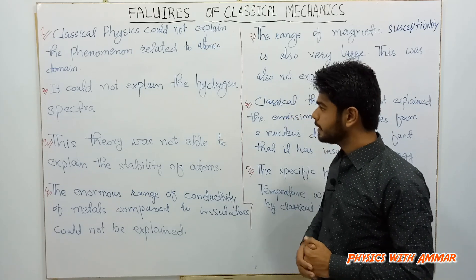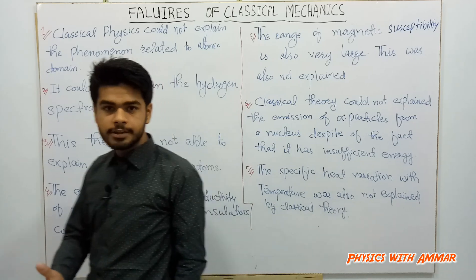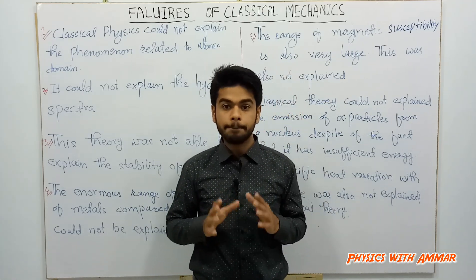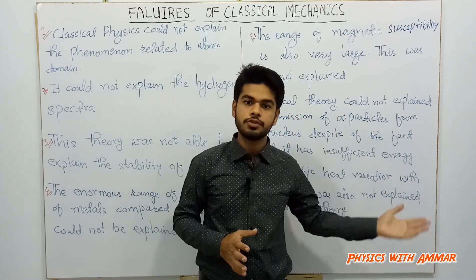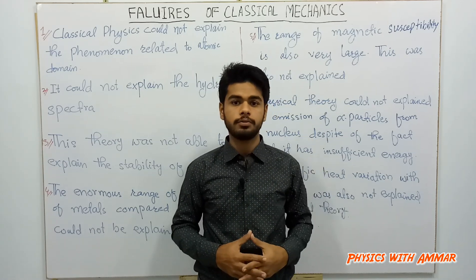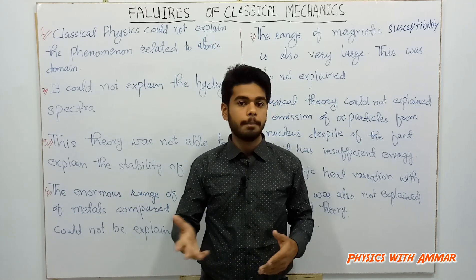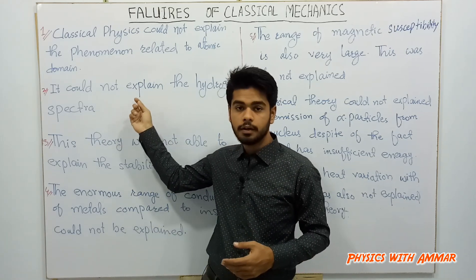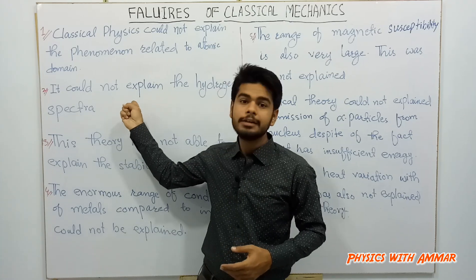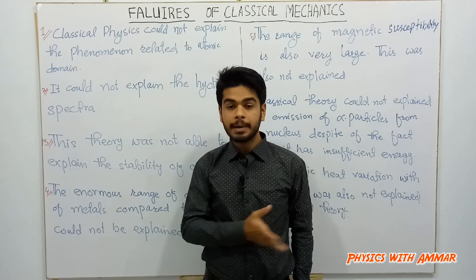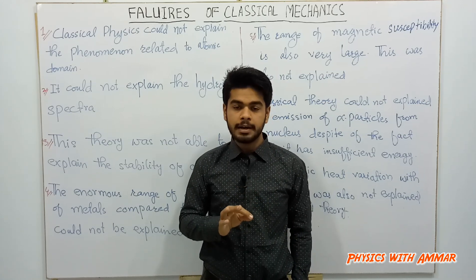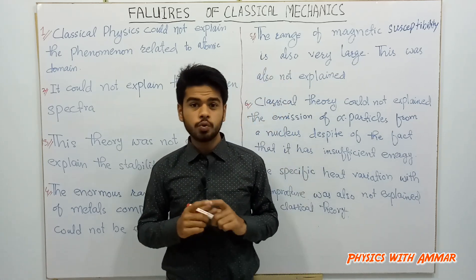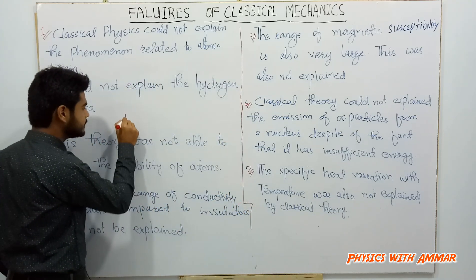The second failure: classical mechanics could not explain the hydrogen spectrum. According to classical mechanics, the hydrogen spectrum should be continuous. We have made a video about the hydrogen spectrum — Physics with Ammar — you can watch it. But when we observe it experimentally, the spectrum turns out to be discrete, not continuous. This was a major failure.